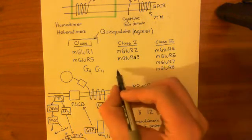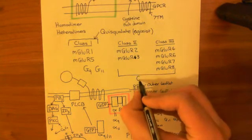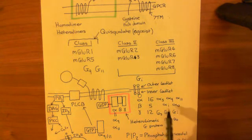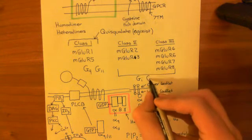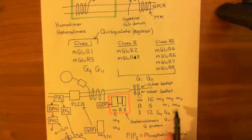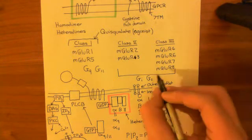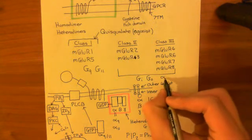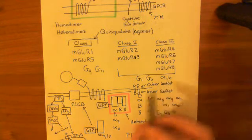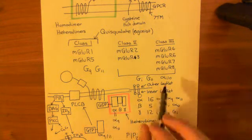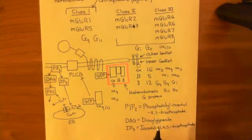Basically, they are coupled to the same G proteins. All of these are coupled to either the Gi protein, in which the alpha subunit is the alpha i subunit, or they are coupled to G0, where the alpha subunit is the alpha zero subunit. That's why people will often write alpha i slash zero, to denote that this alpha subunit can either be i or zero. Just like q and 11 have pretty much the same function, i and zero have pretty much the same function as well.